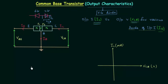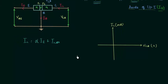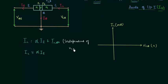We already know the collector current IC is equal to alpha times IE plus ICBO, where ICBO is the reverse saturation current or leakage current. ICBO is very small compared to alpha times IE, so we can neglect ICBO and IC is nearly equal to alpha times IE. Notice there is no VCB in this equation, so IC is independent of VCB.